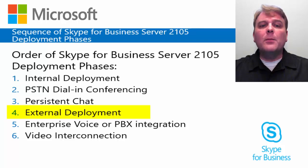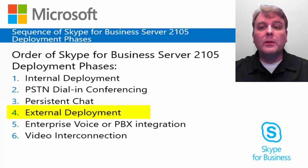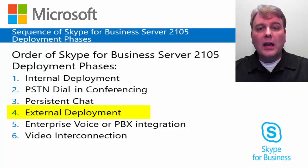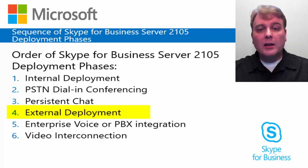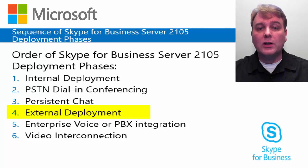In some organizations, PSTN dial-in conferencing and edge server deployments are deployed at the same time because they complement each other. With both options available, users can easily join a web conference in various situations — an external user who has been invited to a web conference, an internal user who is driving toward work, and an internal user without access to a computer can all join the meeting.